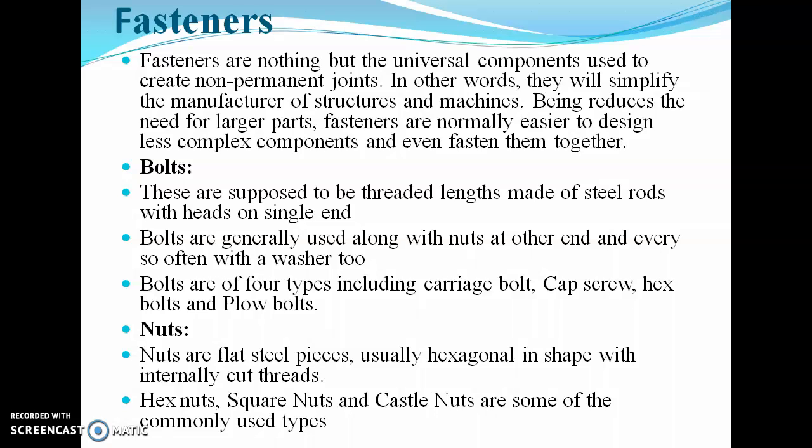Bolts are threaded lengths made of steel rods with a head on one end and threading on the other. Bolts are generally used along with nuts and often with washers too. Bolts are of four types: carriage bolt, cap screw, hexagonal bolt, and plow bolt. Nuts are flat steel pieces, usually hexagonally shaped, with internally cut threads. Types of nuts include hexagonal nuts, square nuts, and castle nuts.